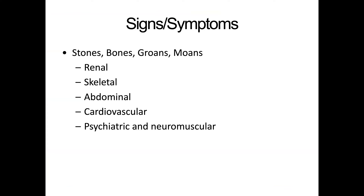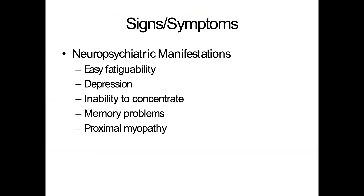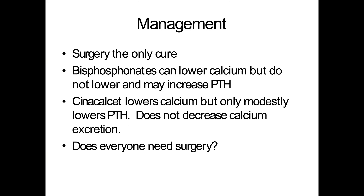Signs and symptoms of hyperparathyroidism: stones, bones, groans, and moans. Worry about kidney stones, skeletal muscle deficiencies, abdominal pain, cardiovascular symptoms, and psychiatric and neuromuscular symptoms. Neuropsychiatric signs include easy fatigue, depression, difficulty focusing, memory issues, and proximal myopathy. Surgery is really the only cure. Bisphosphonates lower calcium but may actually increase parathyroid hormone. Cinacalcet lowers calcium but only modestly lowers PTH. Does everybody need surgery? When it gets to the point of end organ damage, it's irreversible, and the neuropsychiatric symptoms can be problematic. The operation is very effective with minimal mortality or morbidity.